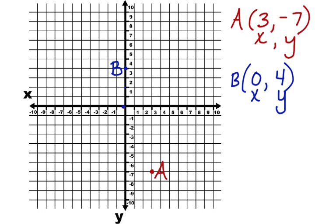That is point B. So again, notice that when you have a 0 as the x value, you're not going to move to the right or to the left on the x-axis because you're already at 0 on the x-axis.